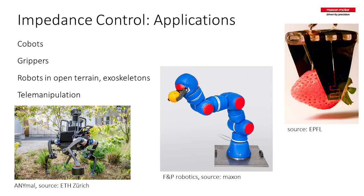Where do we need impedance control? We need it where robots operate in unstructured environments. In a structured environment like precision turning, you want extremely hard and very stiff control — most engineers have learned to make stiff control, using gears and reinforcements if it's not stiff enough. But there are other areas where you don't want that — what I call the terminator effect: a robot goes to something and kills it immediately. In those environments, you want to adapt your impedance and become as soft as your environment, adaptively.